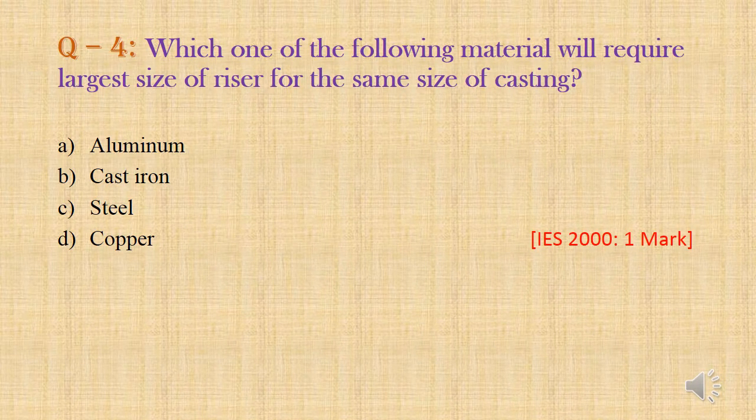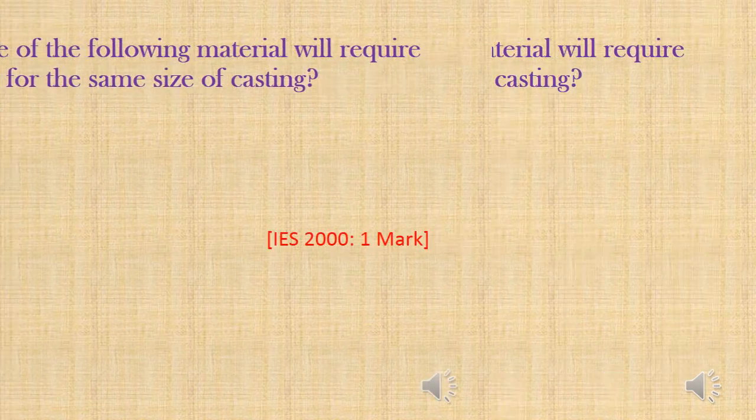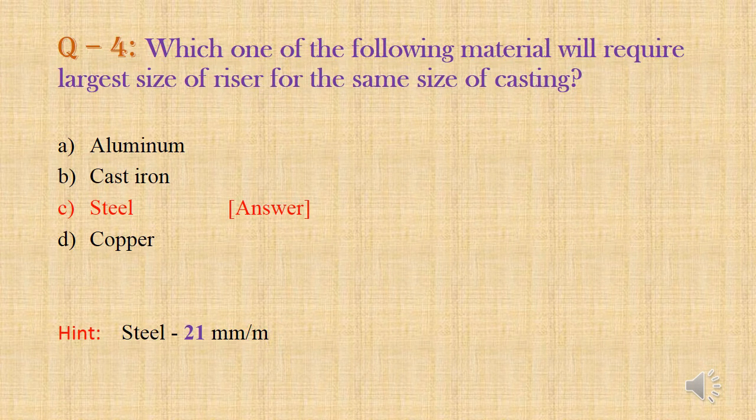Question 4: Which material will require the largest size of riser for the same size of casting? Options: aluminium, cast iron, steel, copper. The question is asking which metal has the largest shrinkage allowance. Among the options, steel has the highest shrinkage allowance at 21 mm per meter. Answer: Option C — steel.